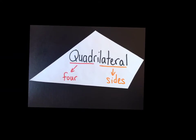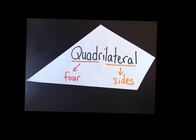The first definition is just a quadrilateral. Quad means four, and lateral means side. For example, lateral motion in a football game means side-to-side motion. So a quadrilateral is just any four-sided shape.